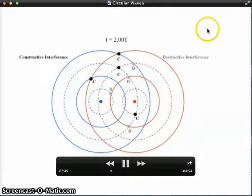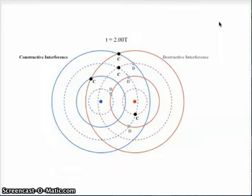So all of our destructive interference locations, we have a solid line meeting a dashed line, rather than constructive, which was solid-solid or dashed-dashed.